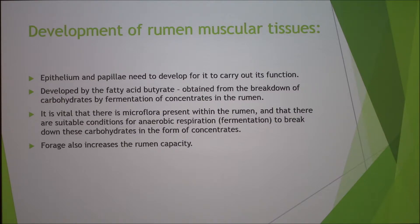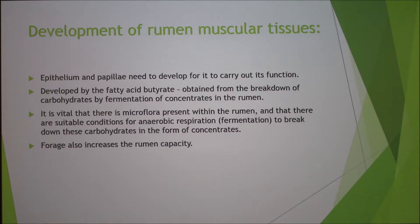The epithelium and papillae need to develop to carry out their function. They are developed by the fatty acid butyrate, obtained from the breakdown of carbohydrates by fermentation of concentrates. It is vital that there are bacteria present in the rumen and that there are suitable conditions for anaerobic respiration, as this breaks down the carbohydrates in the form of concentrates for butyrate to be present.